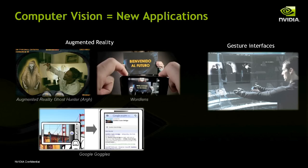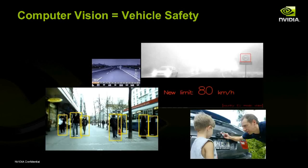Object recognition can be done locally or on a server like Google Goggles. Then there are gestural interfaces, changing the way we interact with our device. Another really big area is automotive — Tegra has a very large presence in the automotive market. Vehicle safety is one of the big holy grail applications for computer vision on these devices, because there's opportunity to save tens of thousands, if not hundreds of thousands, of lives a year by avoiding accidents, whether pedestrian or vehicle-to-vehicle.